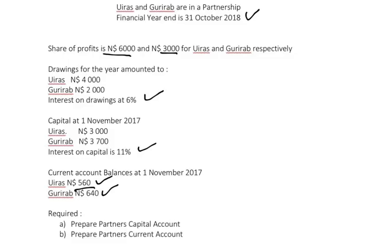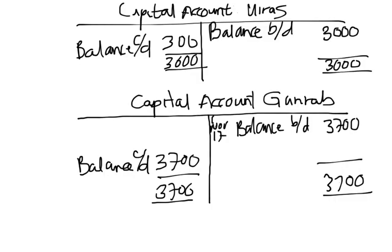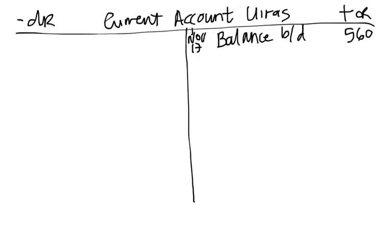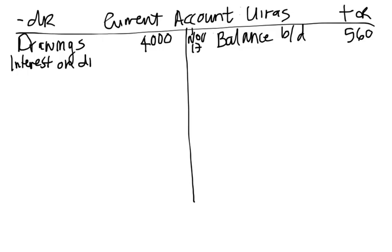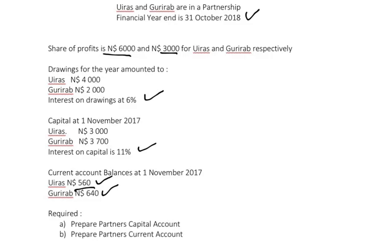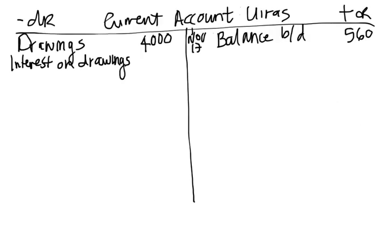Drawings for the year for Uiras amounted to $4,000. Since drawings decrease the current account, we record this on the debit side. Interest on drawings is the interest the partner pays for taking money out of the business, calculated as 6% × $4,000 = $240. We record the interest on drawings of $240 on the debit side as well.